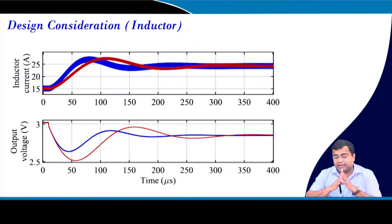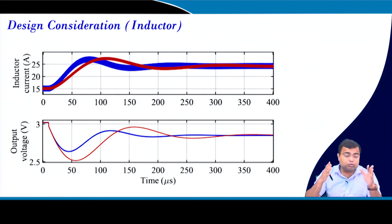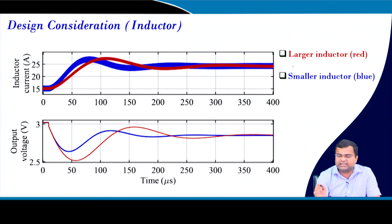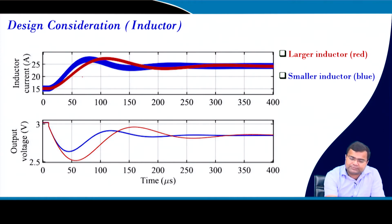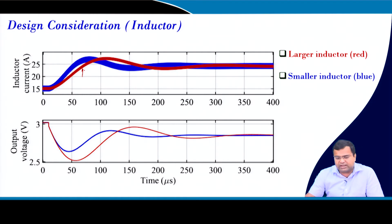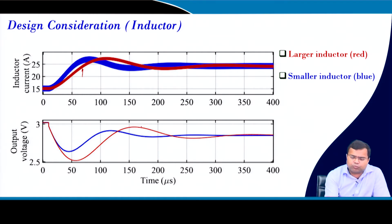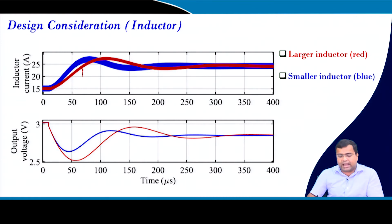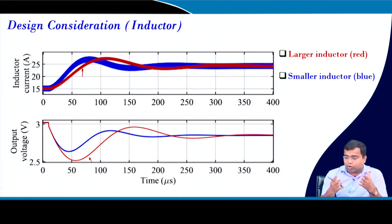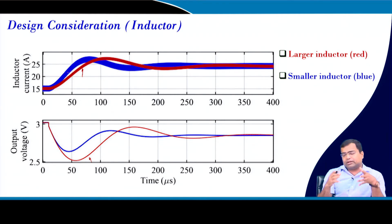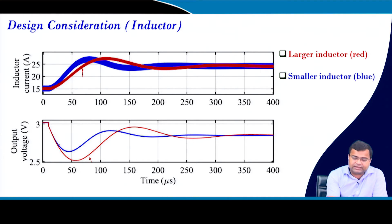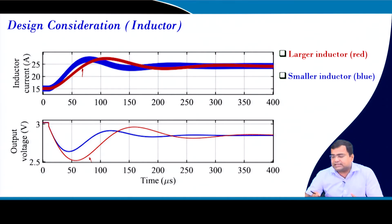In design consideration, comparing a large versus small inductor under open-loop load transient for a practical buck converter: a large inductor offers smaller current ripple, which is beneficial for conduction loss and output ripple, but it penalizes transient response — specifically causing higher voltage undershoot because the inductor current slew rate (1/L) is lower. A smaller inductor, although it increases RMS current, drastically reduces undershoot by offering a higher slew rate.